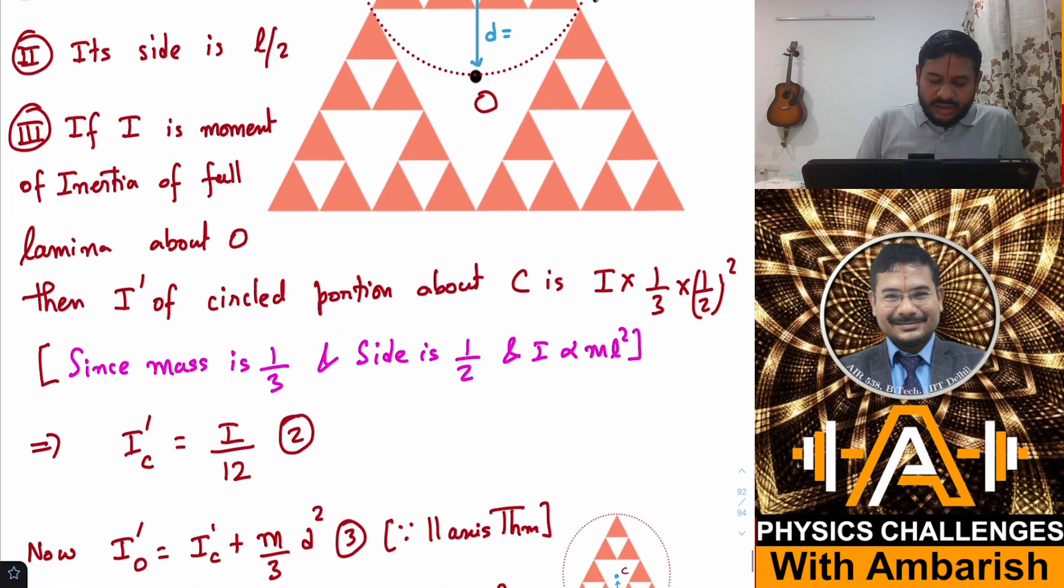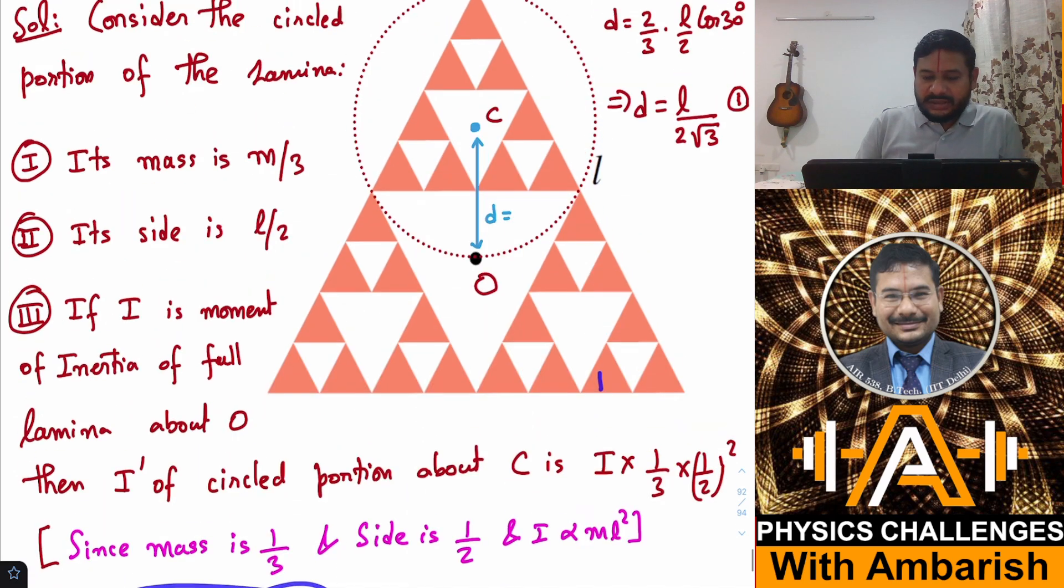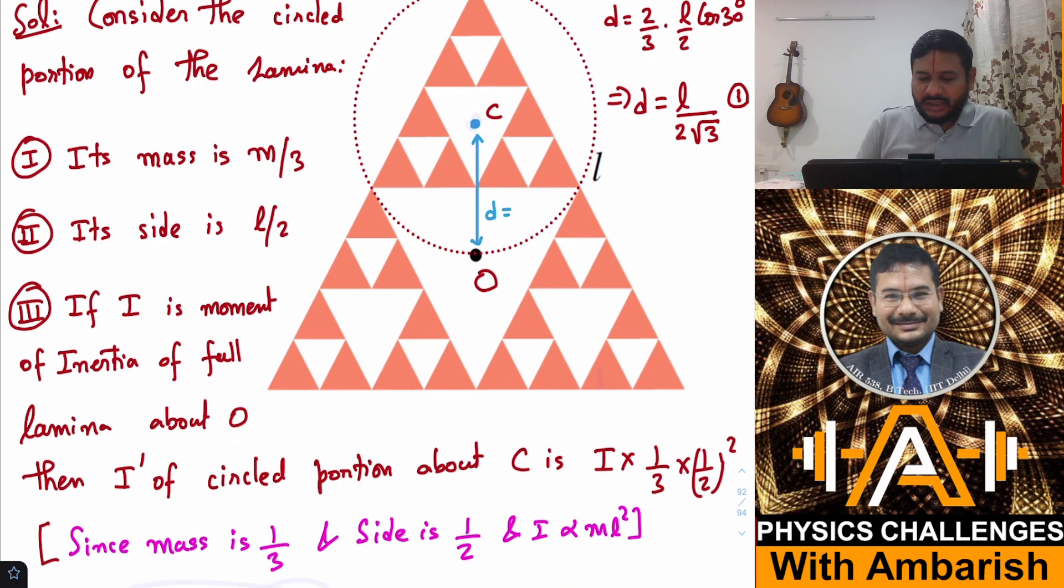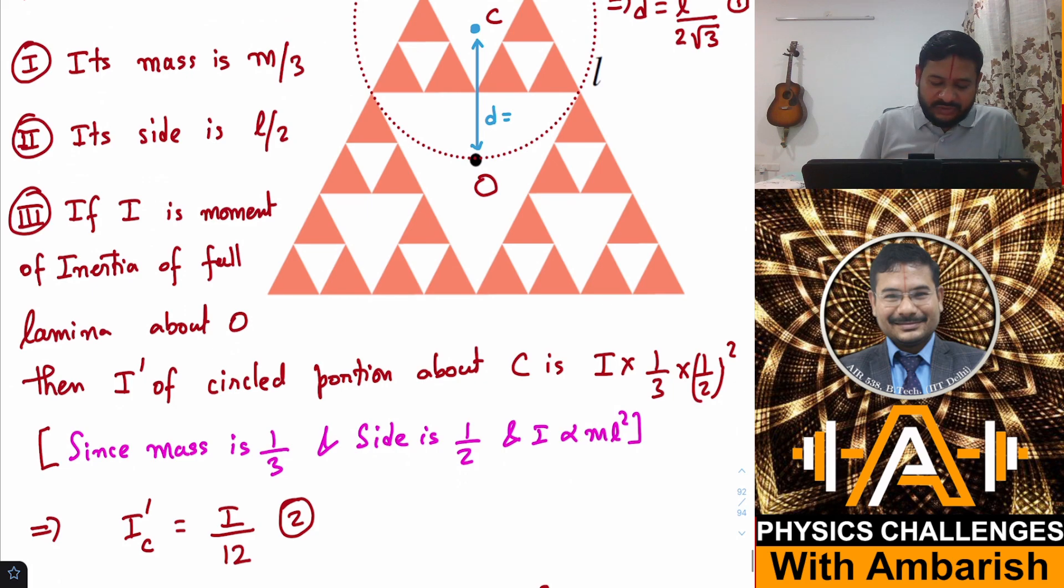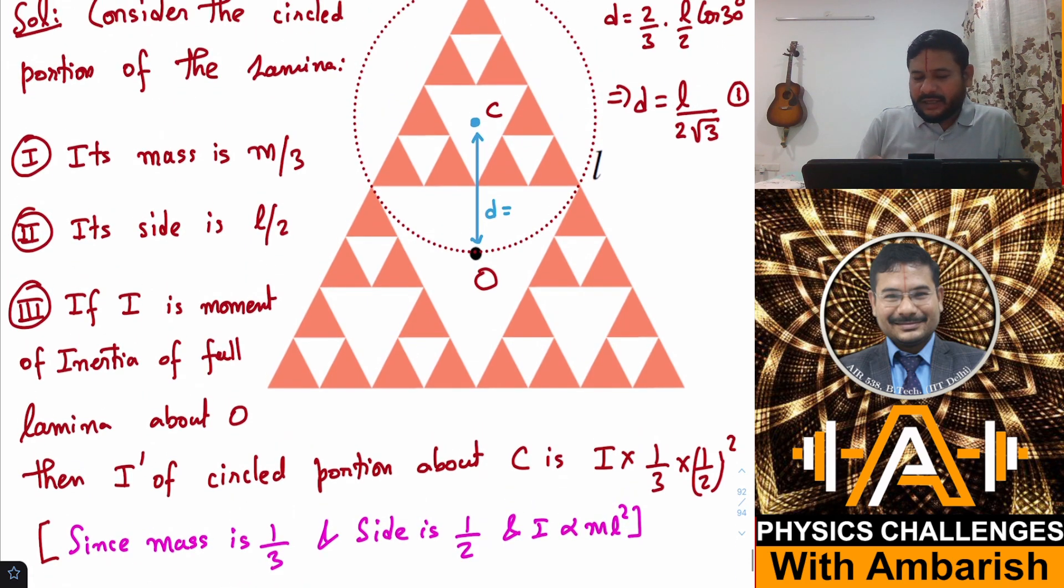I is proportional to mass times length squared. If you just simplify this, 3 times 1/4 is 1/12. So moment of inertia of the smaller circled triangle about C is I/12 if the original moment of inertia is I.